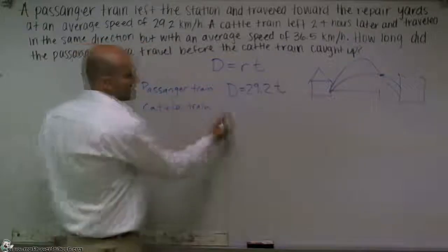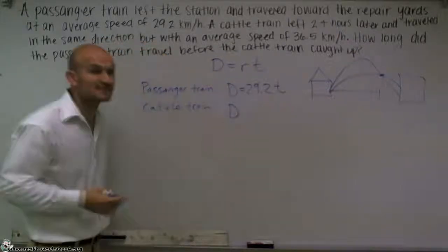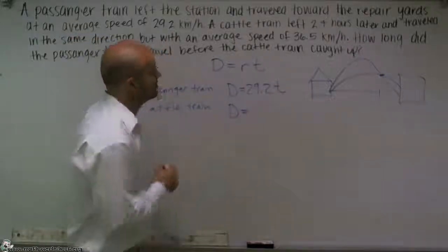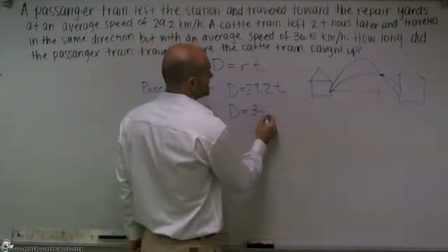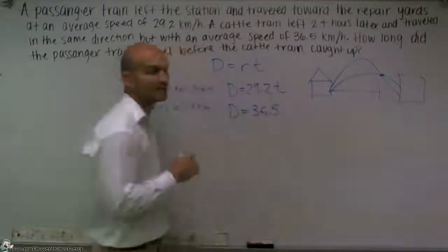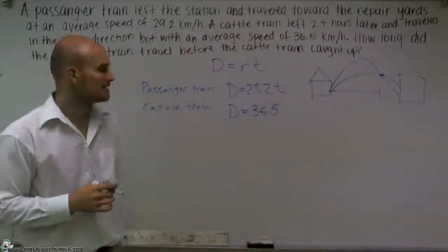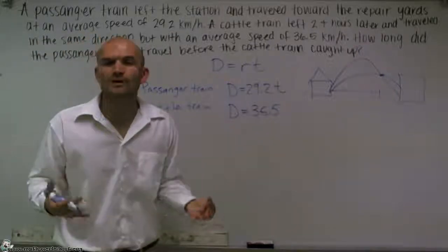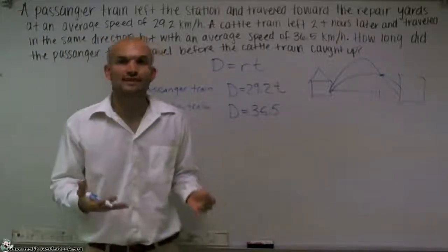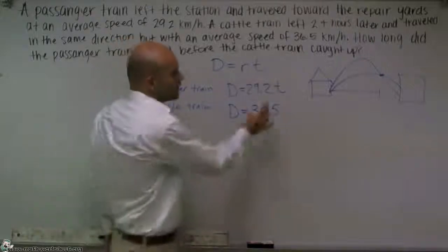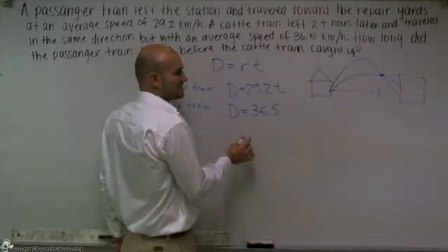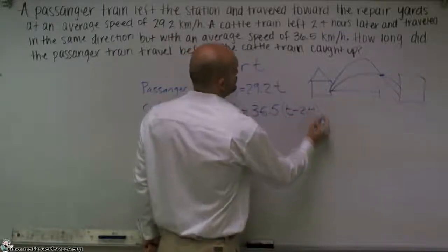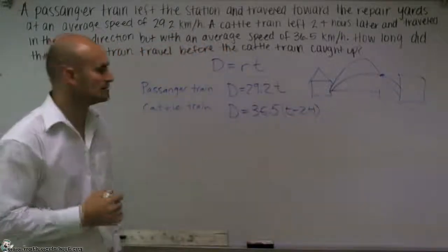The cattle train, again, traveled that same distance, but we don't know what that distance is. So we're going to leave it as D. However, now this one has a rate of 36.5 meters per second. So it's a little bit faster. And then the next thing is it says it left 2.4 hours later. So how can we algebraically represent a train leaving 2.4 hours later? Well, if the time is T, then leaving 2.4 hours later, we're going to subtract 2.4 from our time.